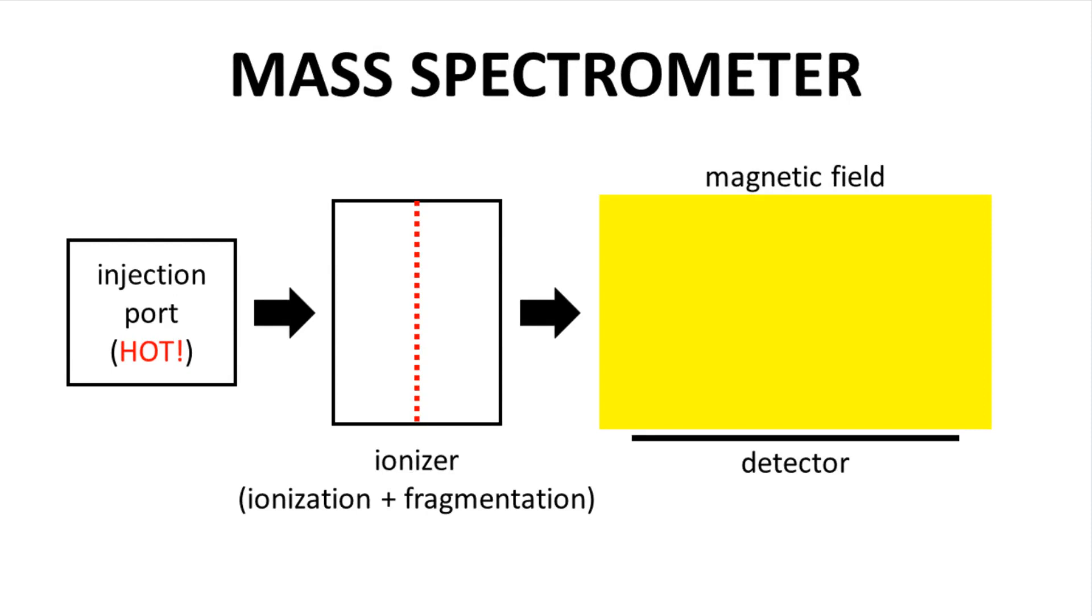Running the mass spectrum begins with introducing the sample molecule into the mass spectrometer. Often a tiny sample of the molecule or mixture is injected into a heated port. The sample boils, vaporizes, and the gas is swept into the ionizer.